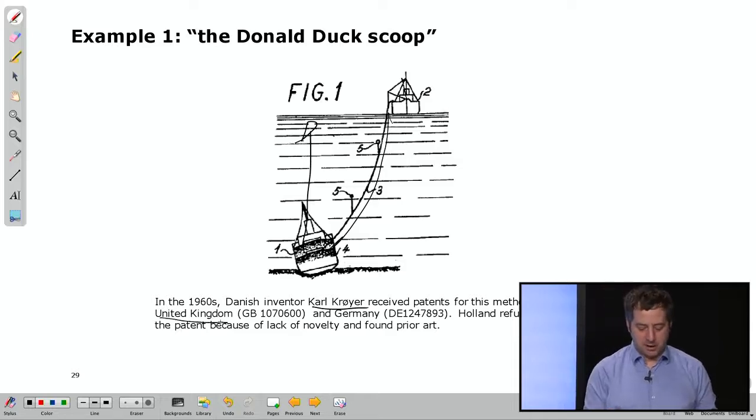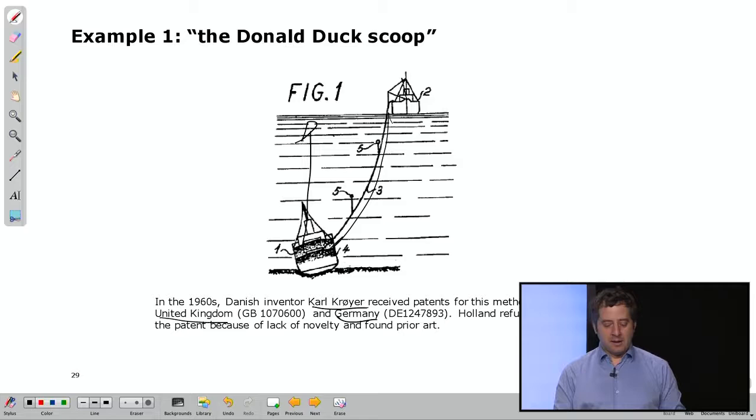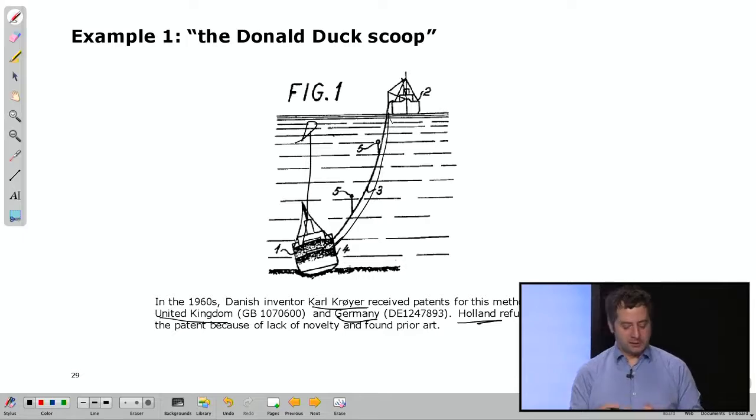So he applied for patents, he obtained one in the United Kingdom and one in Germany. They said, oh great, I have patents here and there. However, Holland, the Netherlands, they refused to grant this patent because in their opinion there was a lack of novelty and they found prior art. So they found a document that said, well, somebody has already done that, so you're not novel. We cannot give you the patent. So what was that?